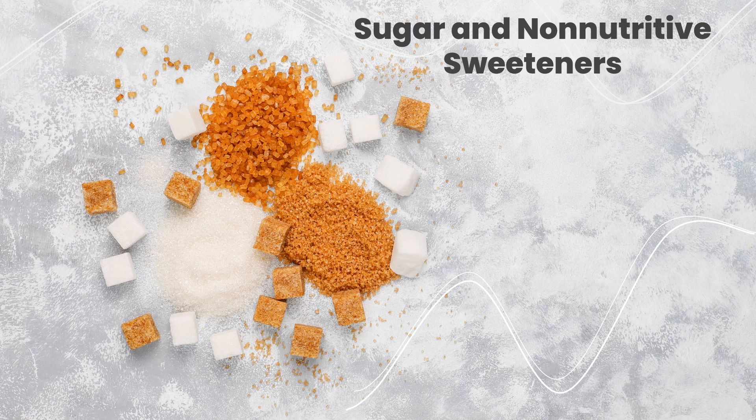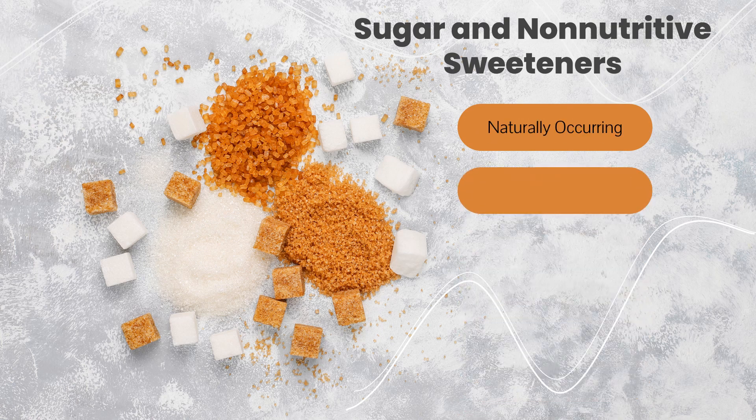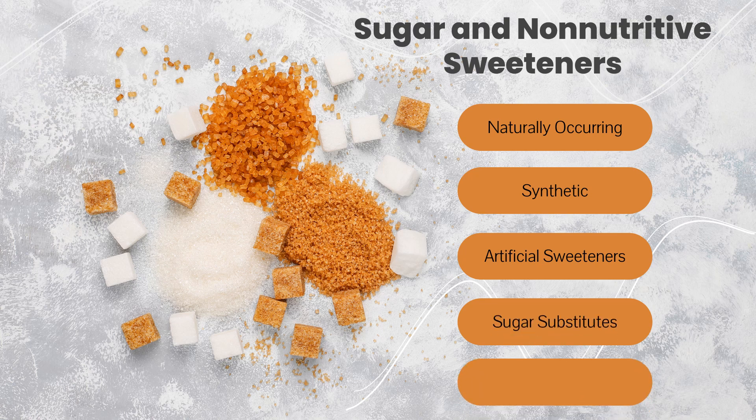Moving on to additional potential dietary carcinogens, it's essential to look at sugar and non-nutritive sweeteners. Sweeteners can be derived from naturally occurring substances — including fructose from fruits, honey, lactose from milk, sucrose from sugar beets or cane, and naturally sweet herbs such as stevia and cinnamon — or from synthetic sources. When we talk about artificial sweeteners, these are synthetic sugar substitutes used instead of sugar, known for their intense sweetening. They are many times sweeter than sugar, so they're used in minute amounts to produce an intense sweetening taste despite being a fraction of the amount of regular sugar.